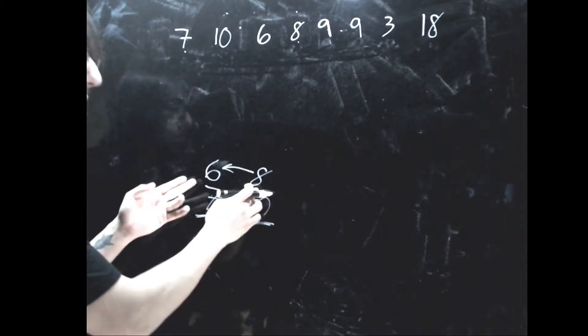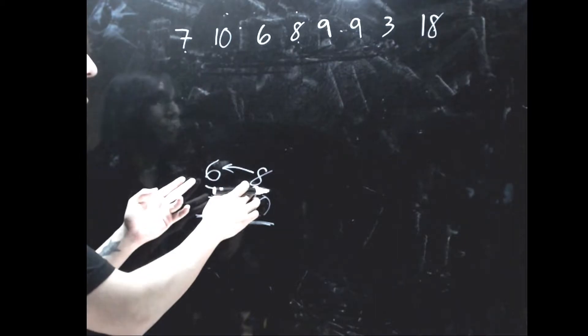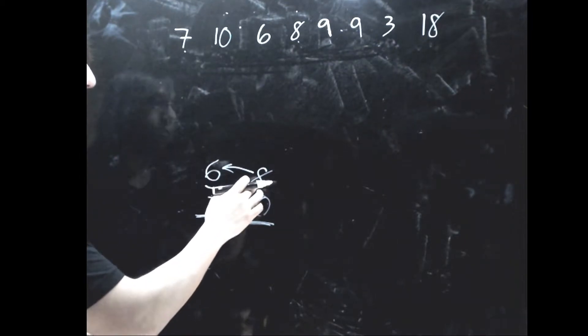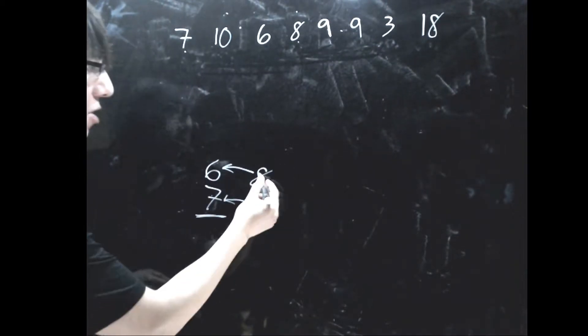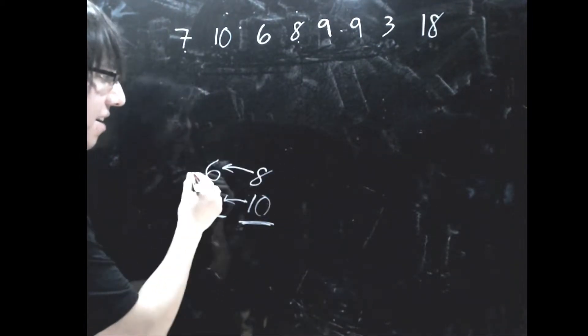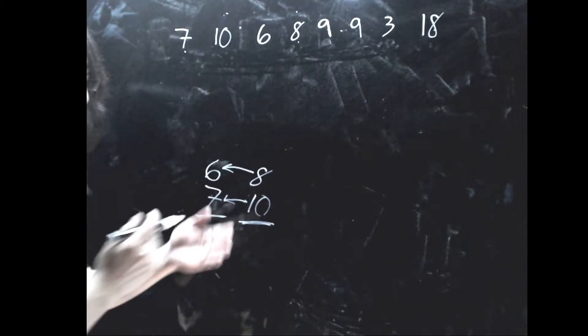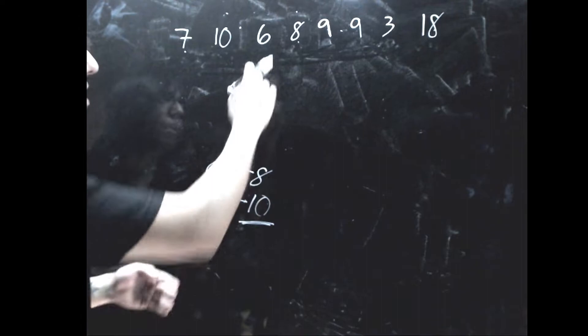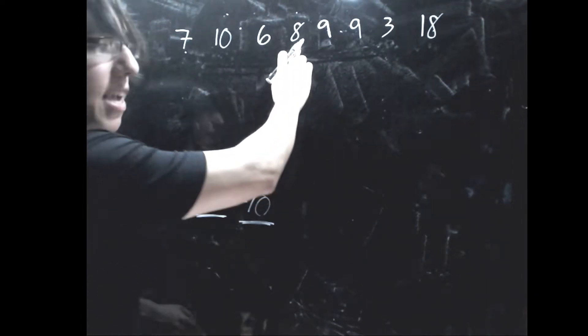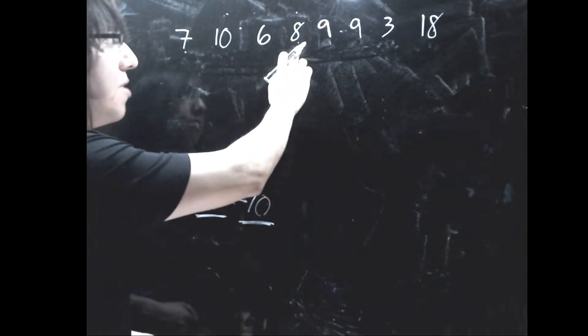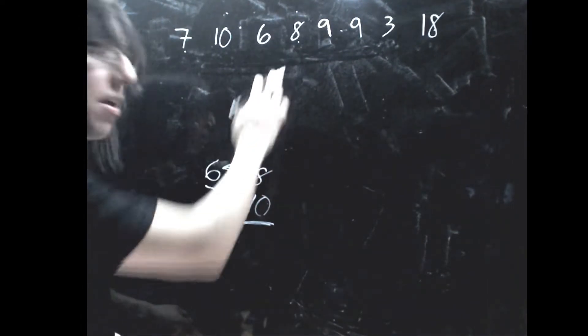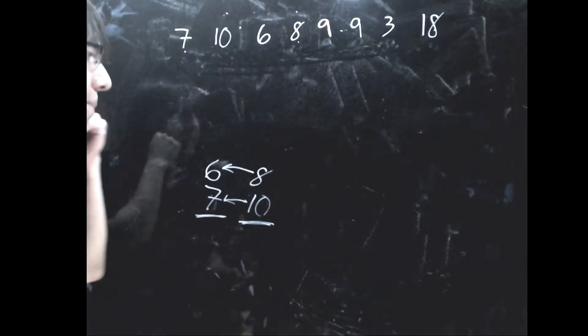This represents another increasing subsequence. If we go from 8 to 6 and then do the reverse — 6, 8 — that is an increasing subsequence in this array.